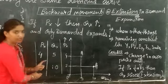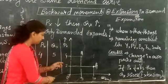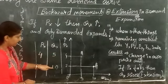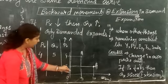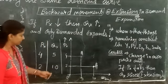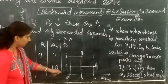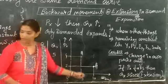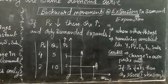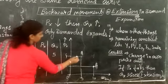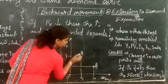At 4 rupees quantity demanded is 5 units, and at 2 rupees quantity demanded is 10 units. I have made the graph — the first point is plotted for 4 rupees on the Y-axis and 5 units on the X-axis; this is point A. The second point is for 2 rupees and 10 units; this is point B. By joining both these points we get the demand curve.